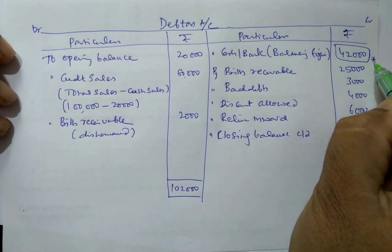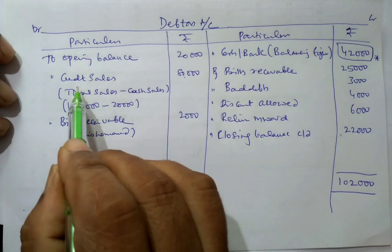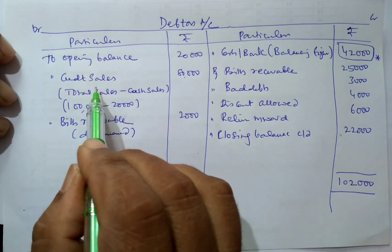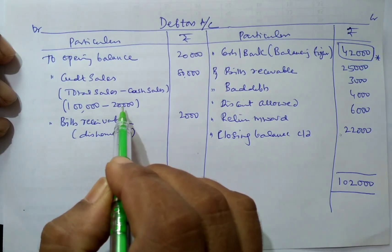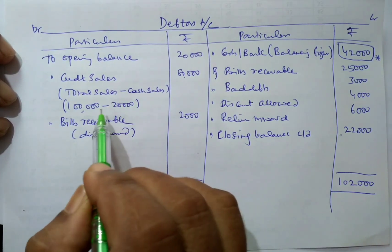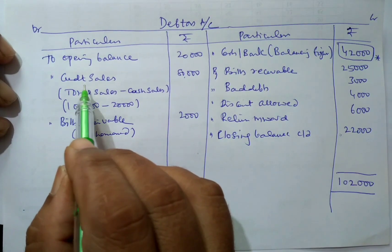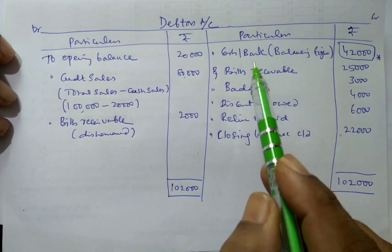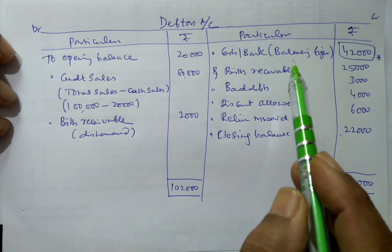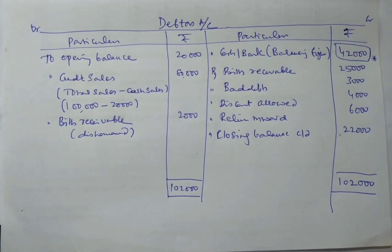What is important in this problem? Usually the missing figure may be credit sales, but in this problem credit sales is given — total sales is given and cash sales is given, and total sales minus cash sales gives credit sales. So in this type of problem, we must calculate credit sales. But in this problem, the missing figure is cash received from debtors. In this way, the debtors account is prepared. Thank you. Jai Hind.